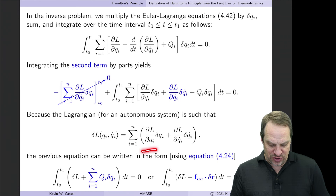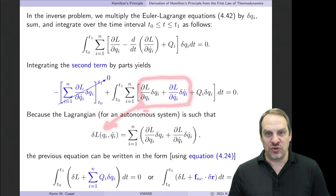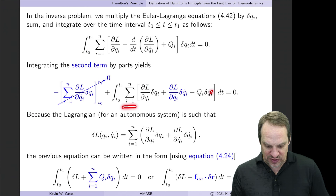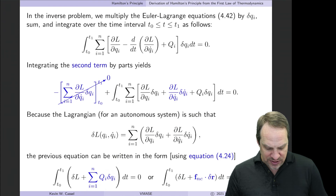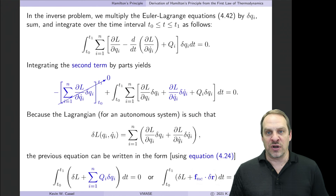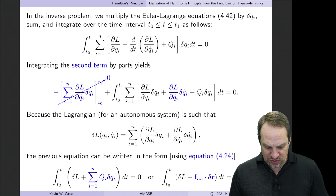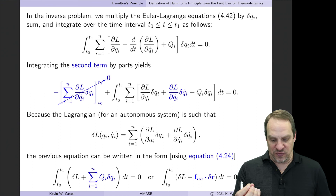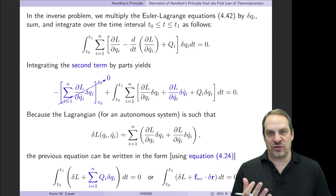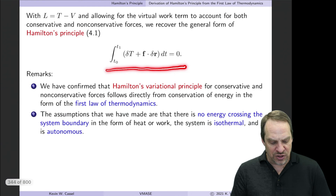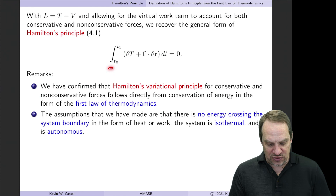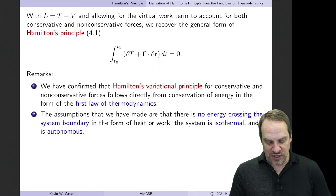For autonomous systems, the variation of the Lagrangian is δL equals ∂L/∂qᵢ δqᵢ plus ∂L/∂q̇ᵢ times δq̇ᵢ. These two terms match the terms from the integration by parts, so we can combine them into δL. We also have the sum of Qᵢ δqᵢ, which equals F·δR. So we arrive at the integral of δL plus F·δR equals zero. Since L is T minus V, combining conservative potential energy with the non-conservative work gives the original form of Hamilton's principle.